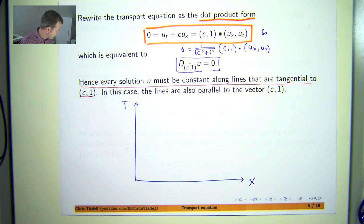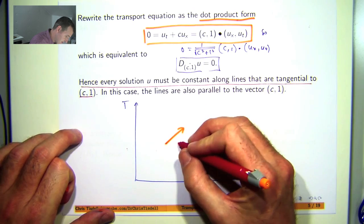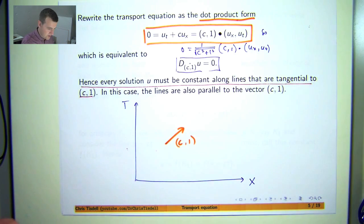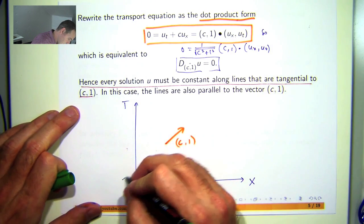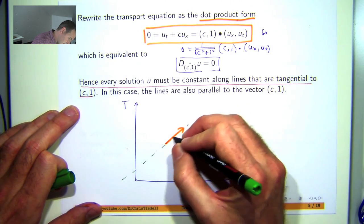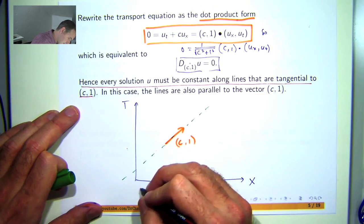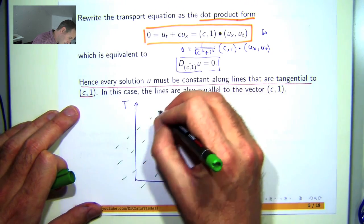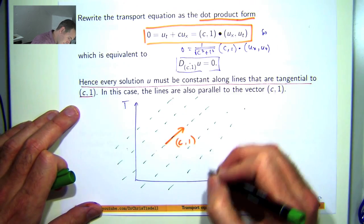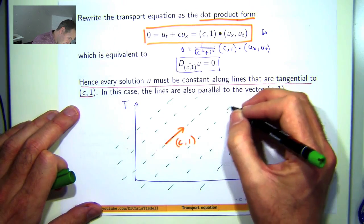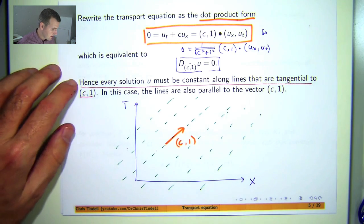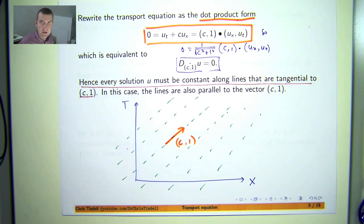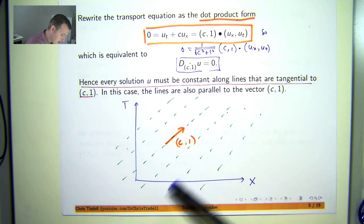So let me draw in the constant vector c one, c comma one. And let's draw in all the lines that are tangential, in this case parallel to this vector. So think of this as the domain of our solution u.